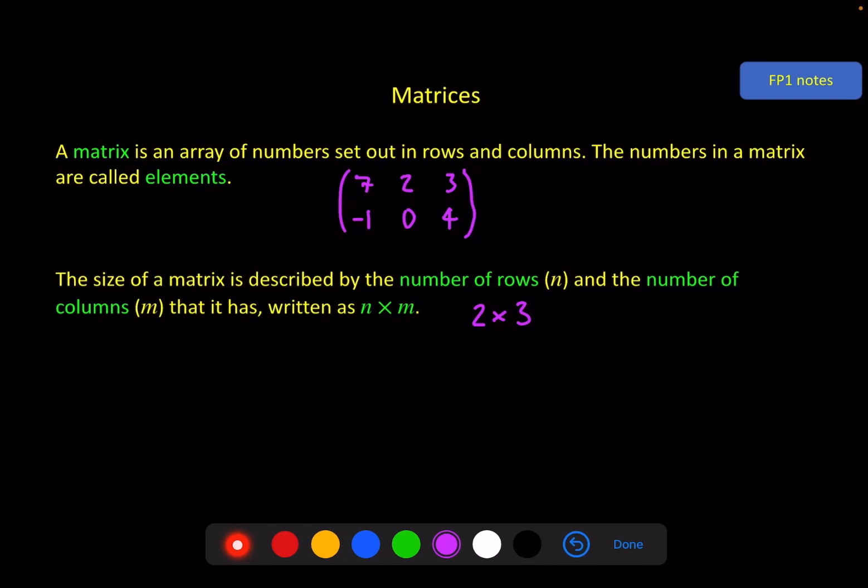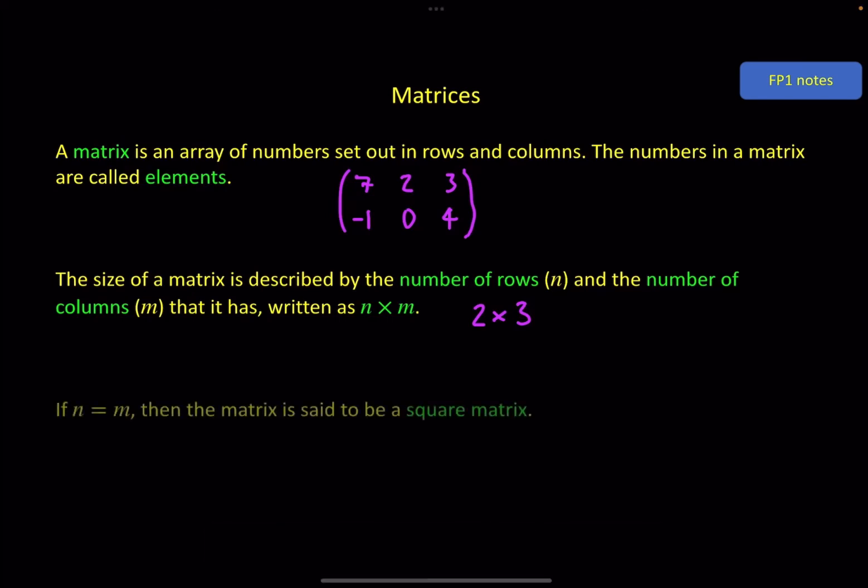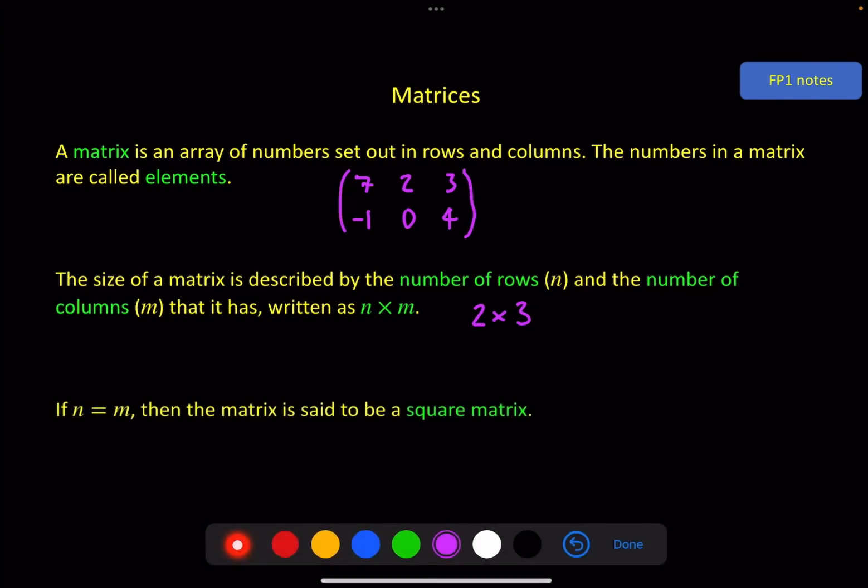Vectors, of course, are usually a 2 by 1 or a 3 by 1 if you're working in 3D vectors, because they just have the one column. If you have the same number of rows as columns, then that is said to be a square matrix. So here, for example, if I write a 2 by 2 square matrix, like so.